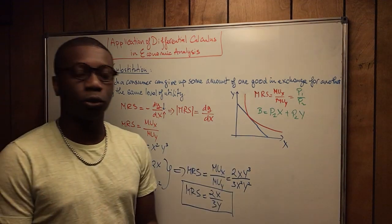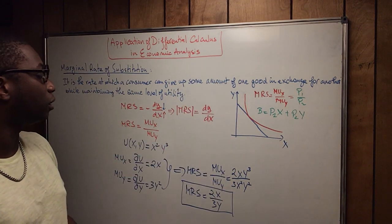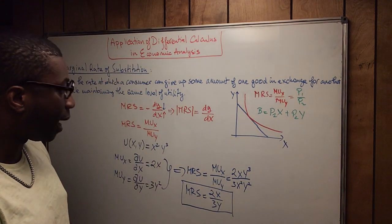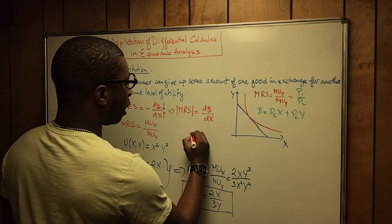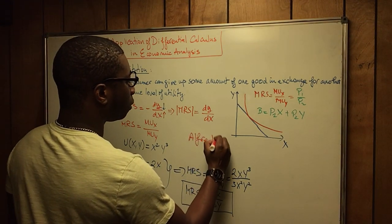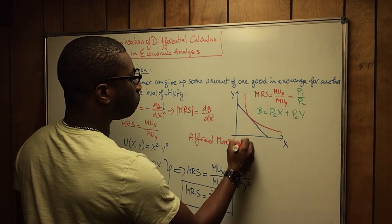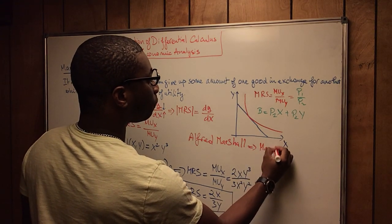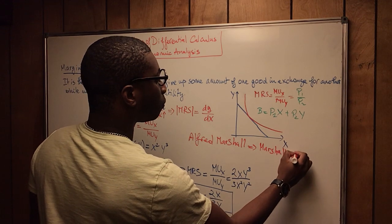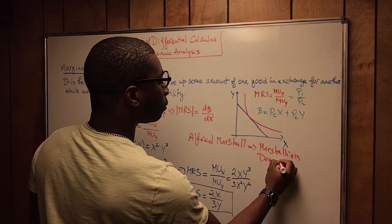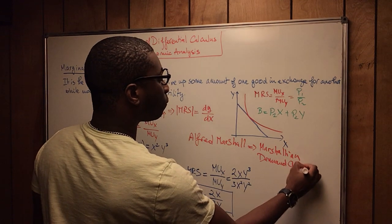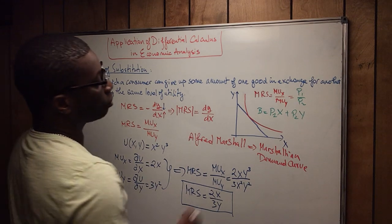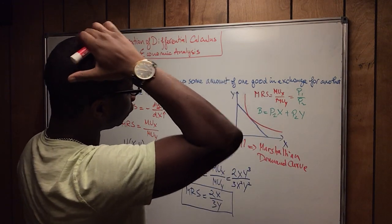This is interesting because the marginal rate of substitution and the maximization of utility were developed by Alfred Marshall, who was a British economist. What you see here — the marginal rate of substitution with the indifference curve — is what we call the Marshallian demand curve.